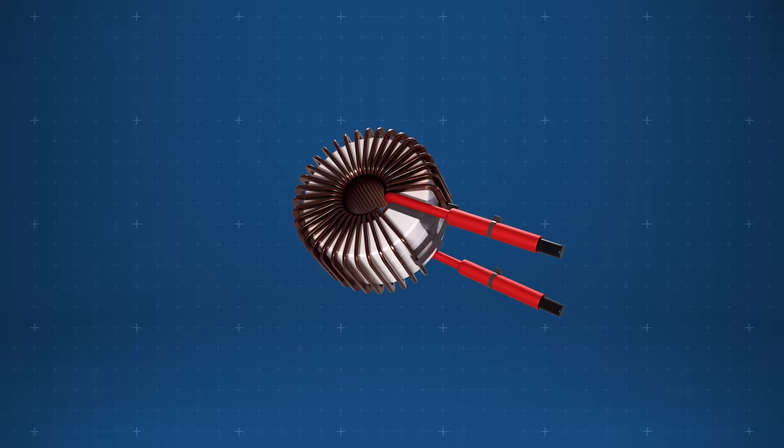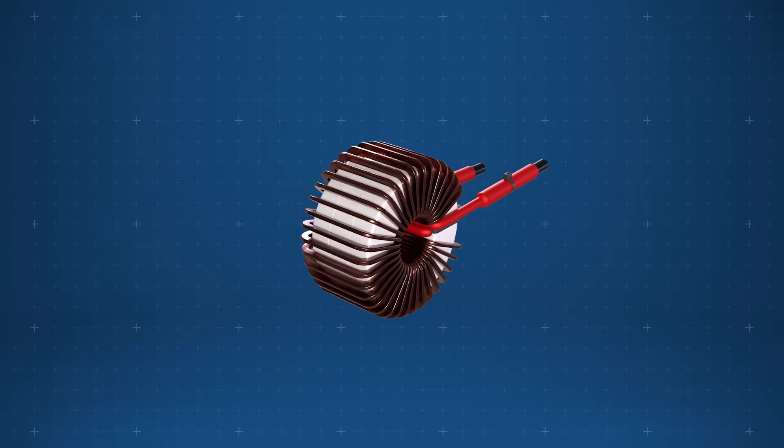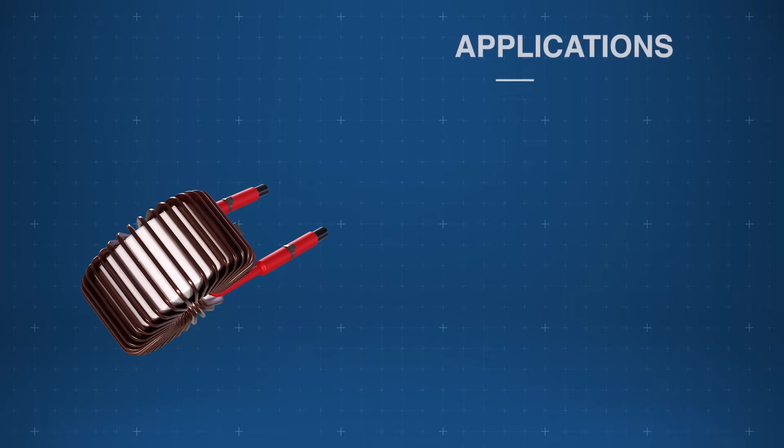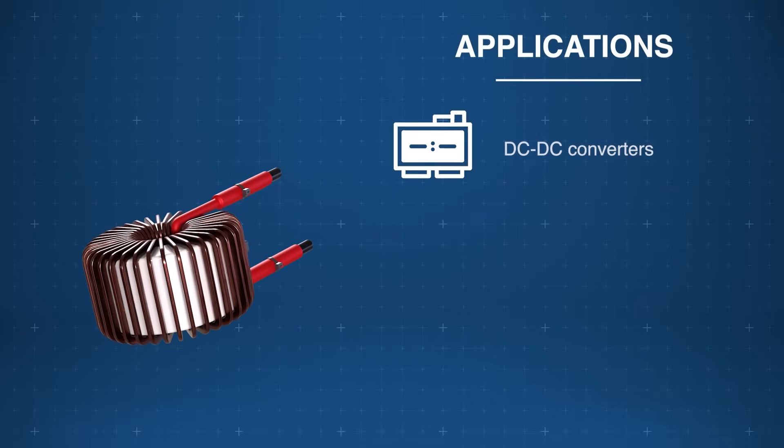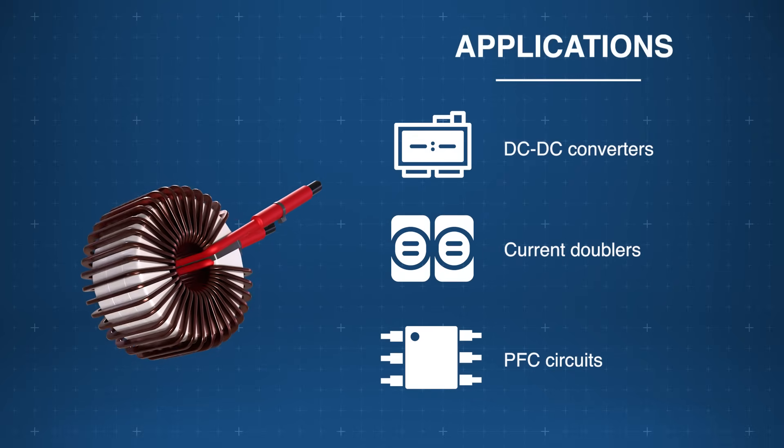The Bourns 15322X HPHR chokes deliver robust ferrite core performance for a wide range of applications including DC to DC converters, current doublers, and PFC circuits.